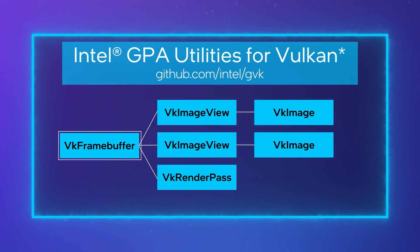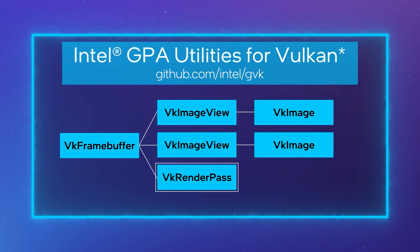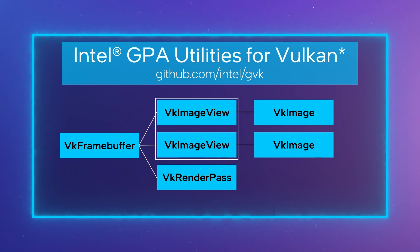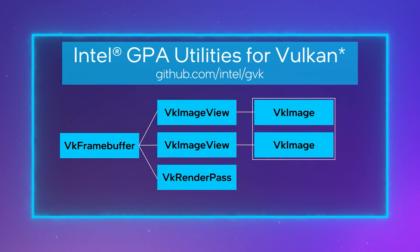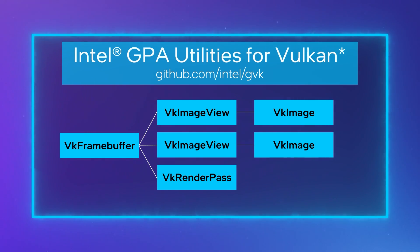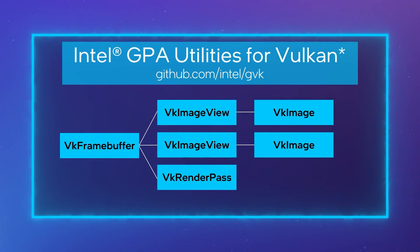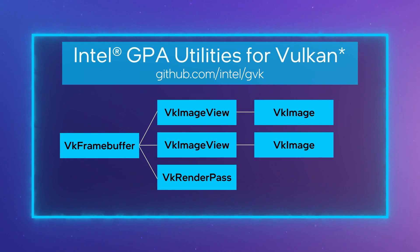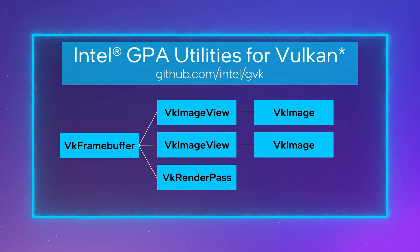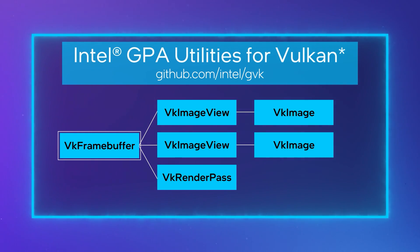Thanks, Pamela. The first thing that I'm going to talk about is GVK's reference-based lifetime management for Vulkan handles. For example, VKFrameBuffer is a complex object. It references a VKRenderPass and a variable number of VKImageViews, that each themselves reference a VKImage. VKImage also references a VKDeviceMemory, but I'm not going to be covering that here. Do know that GVK integrates AMD's VMA, or Vulkan Memory Allocator, to handle memory allocations.